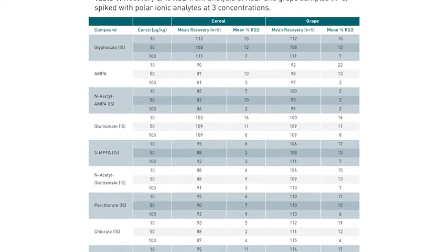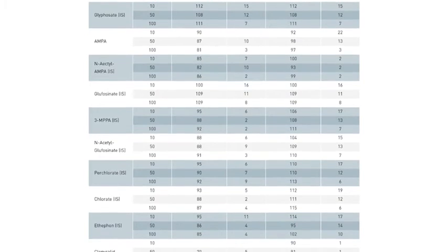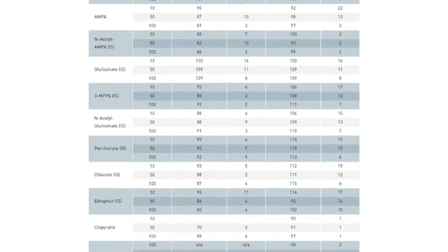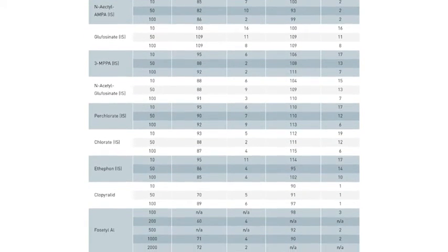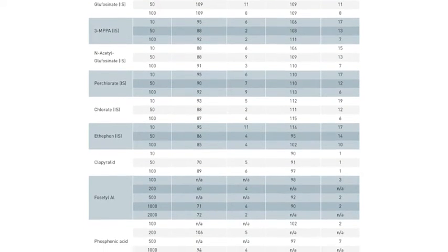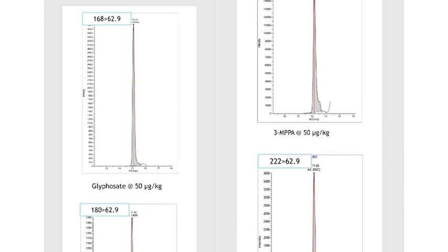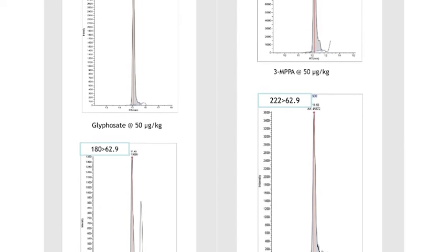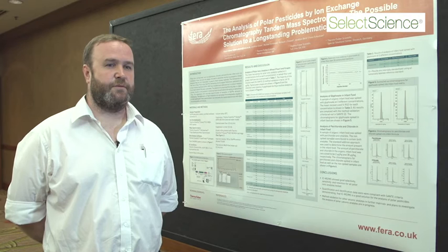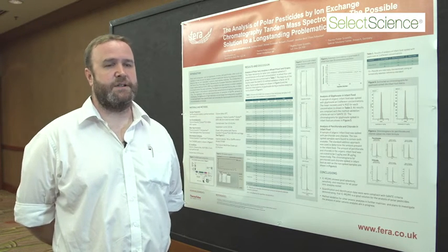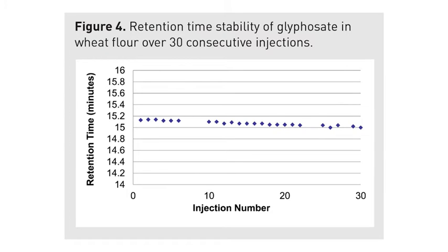Looking at table one, we're validating at 10, 50, and 100 micrograms per kilogram for most of the 13 pesticides and contaminants. The recoveries and relative standard deviations meet the criteria set in the current Sante documentation. Figure three shows good peak shapes for important analytes such as glyphosate, glufosinate, and their metabolites. One issue with other liquid chromatography systems has been retention time stability; figure four shows a fairly stable retention time for glyphosate over an average batch run of approximately 16 hours, losing only 0.3 minutes — within Sante acceptance criteria for pesticide identification.